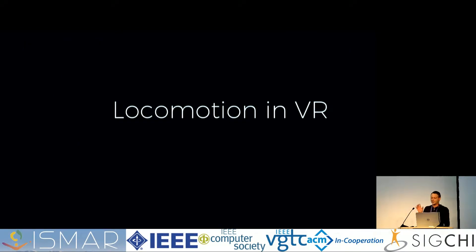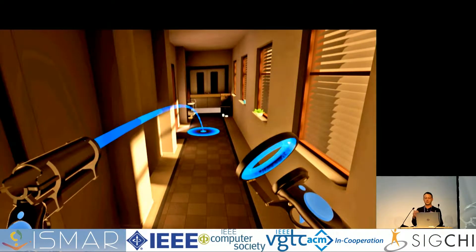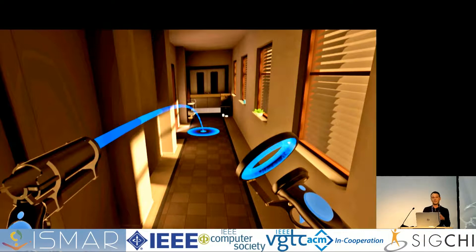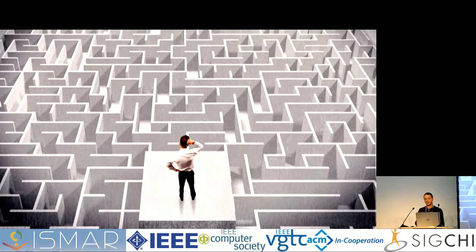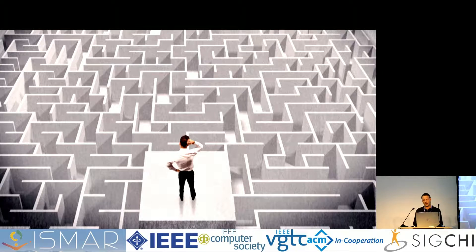Locomotion in VR is challenging. Usually the space displayed in the virtual world doesn't match the one we have in the real world. The most applied solution is the use of teleportation, where the user selects a spot, presses a button, and is there. This technique works without any physical movement — the user may always stay on the same physical spot. But teleportation comes with certain drawbacks: users may lose the feeling of distance, lose their orientation, and it may negatively impact the feeling of presence. A further drawback is that one hand is usually required, while the common way we walk through a world is by using our feet.